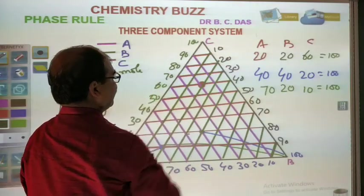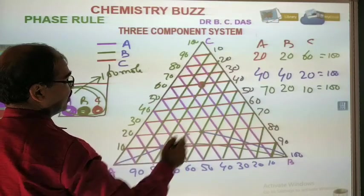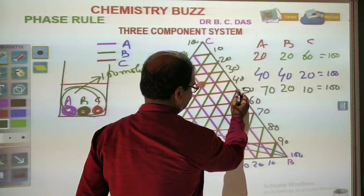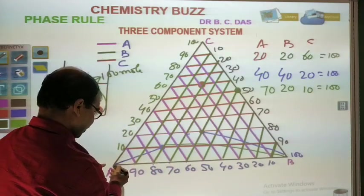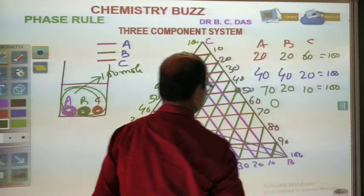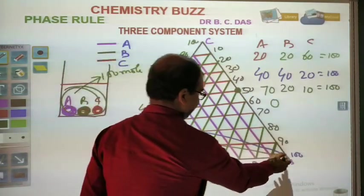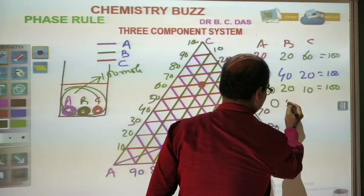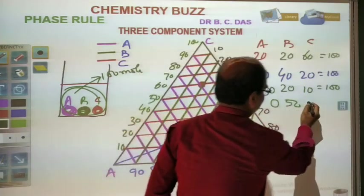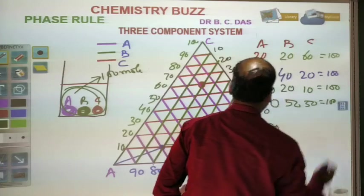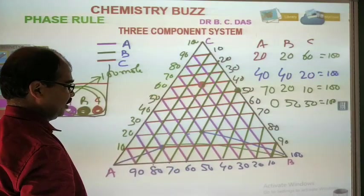Again, in this graph we can take a point on the sides of the triangle — say AB, or AC, or BC. Suppose this is the point on BC. Then the composition of A is 0 here because it is on the BC line. The composition of B is 50% and the composition of C is also 50%, so the total is 100%, and the mixture becomes a two-component system with B to C ratio of 50:50.